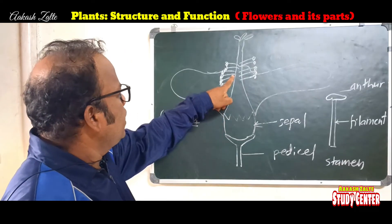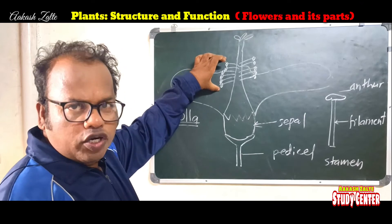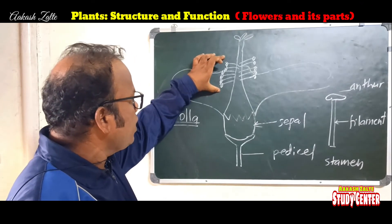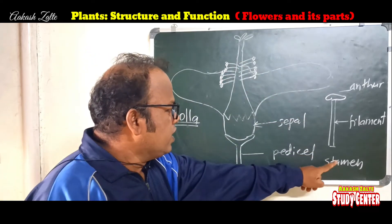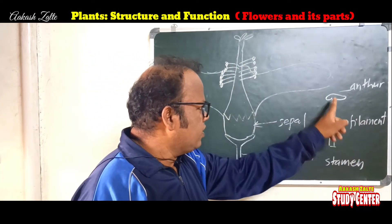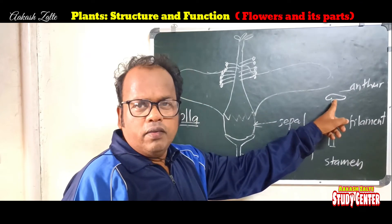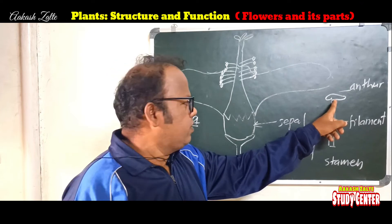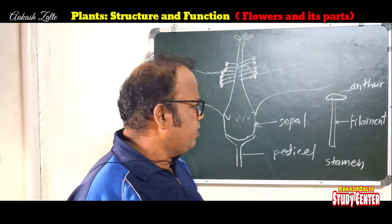These are the male reproductive organs of any flower — these are stamens. Let's take one stamen. Stamen is made up of anther and filament. This is the anther. In this anther, there is reproductive liquid — small, small liquid. So: anther and filament.